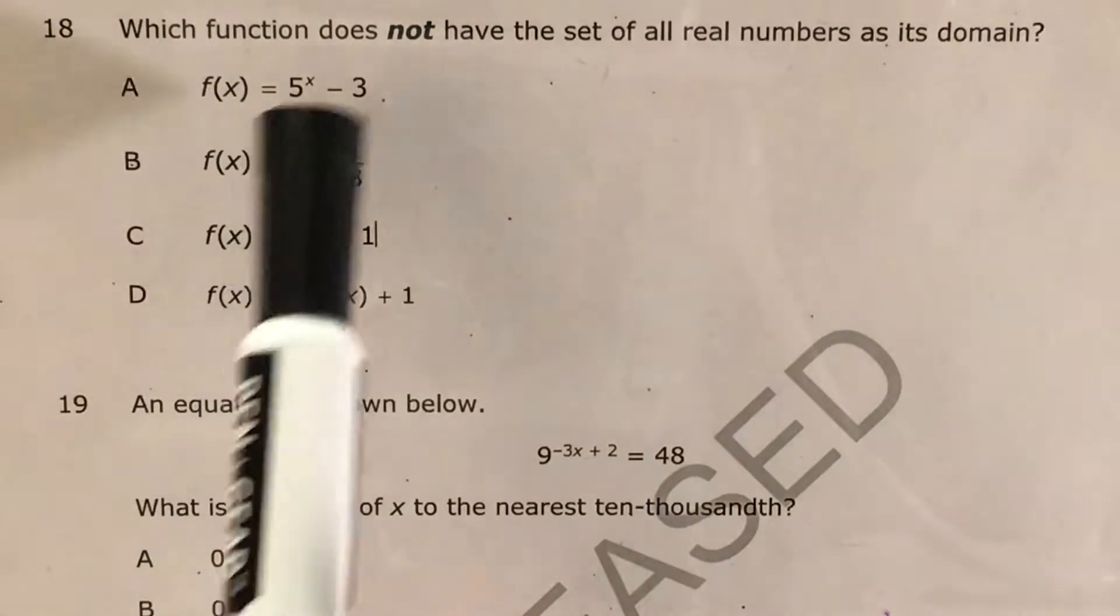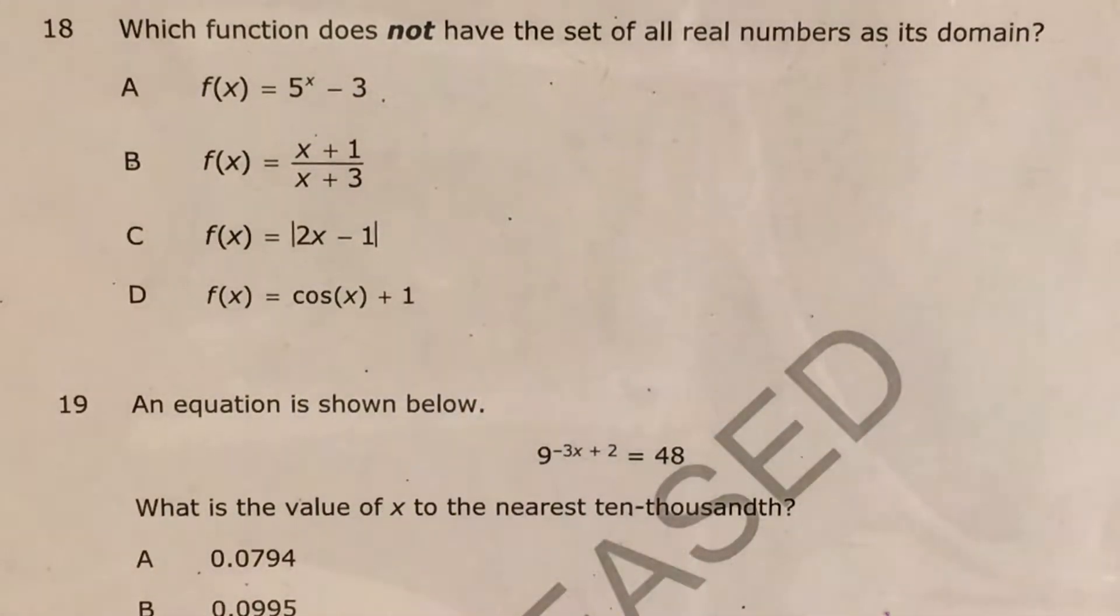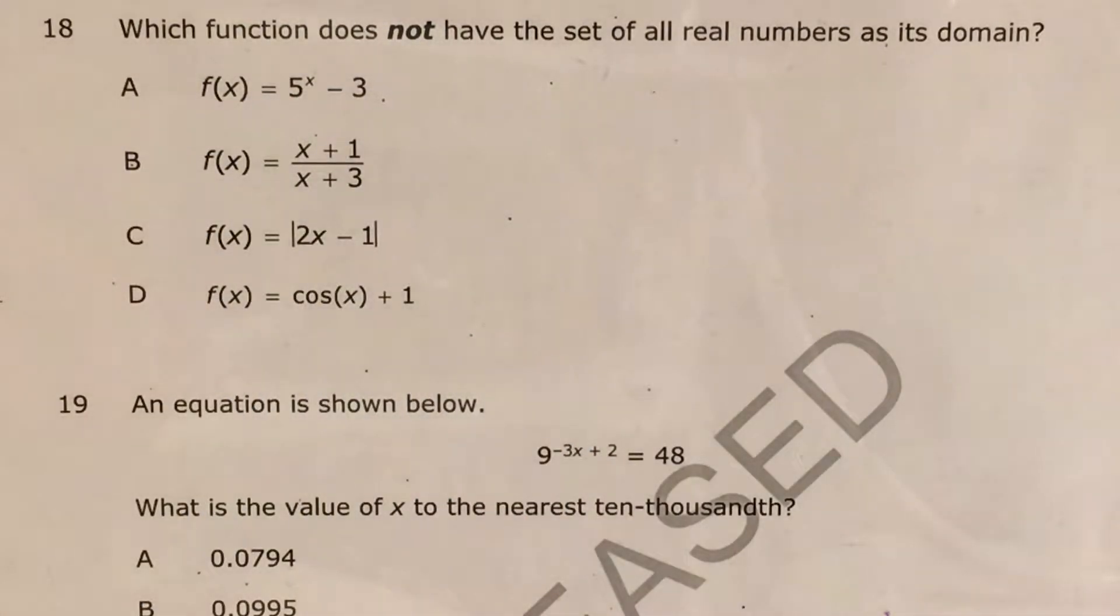This question gives us four answer choices with different types of weird functions: exponential, rational, absolute value, and trig, and asks us to find the function that does not have the set of all real numbers as its domain.